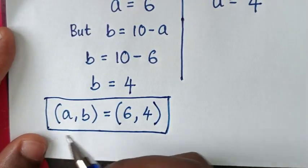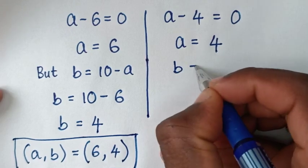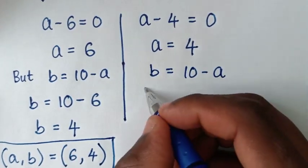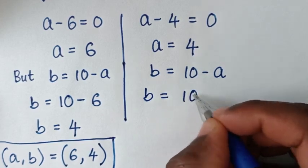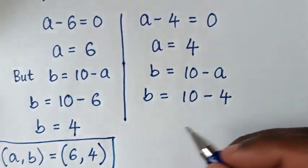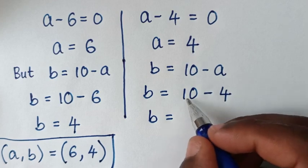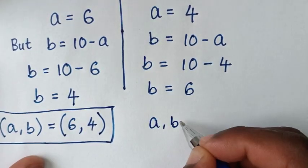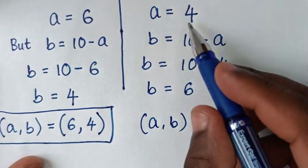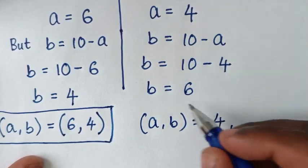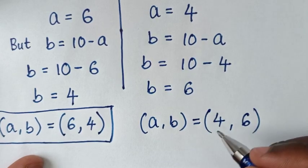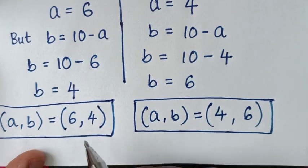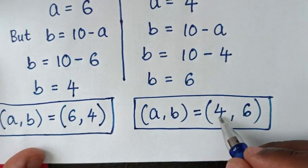Now, for the second solution, b is equal to 10 minus a, where a is 4. So b equals 10 minus 4, which is 6. Therefore, a equals 4 and b equals 6, giving us the second solution (4, 6). So the two solutions are (6, 4) or (4, 6).